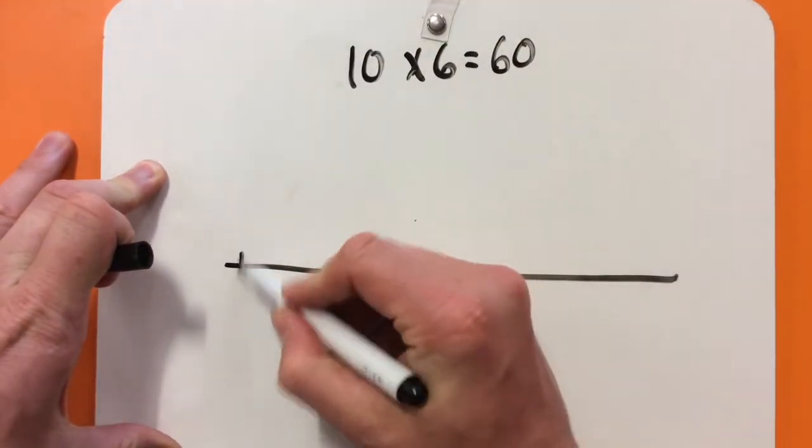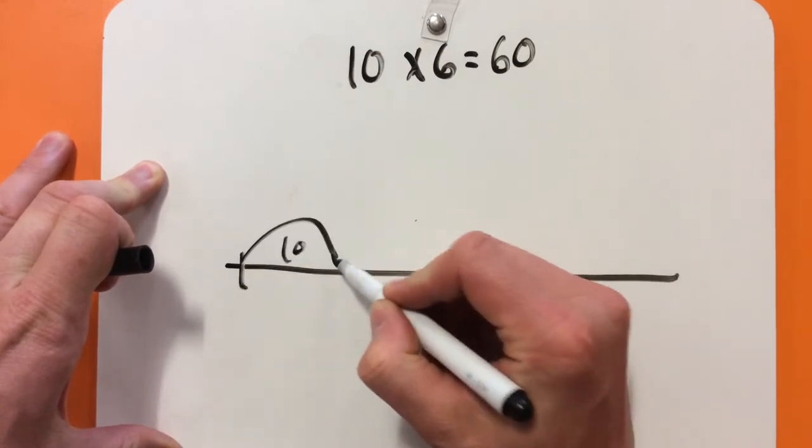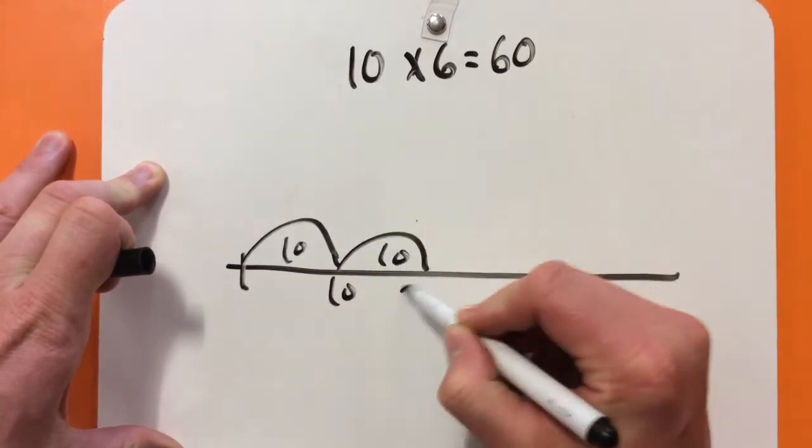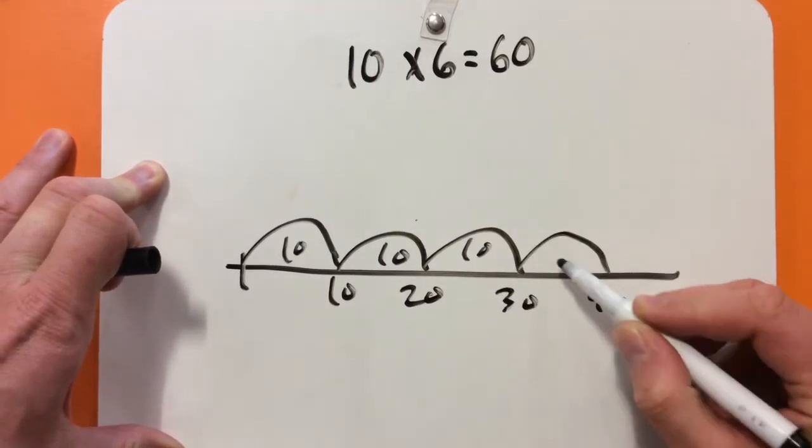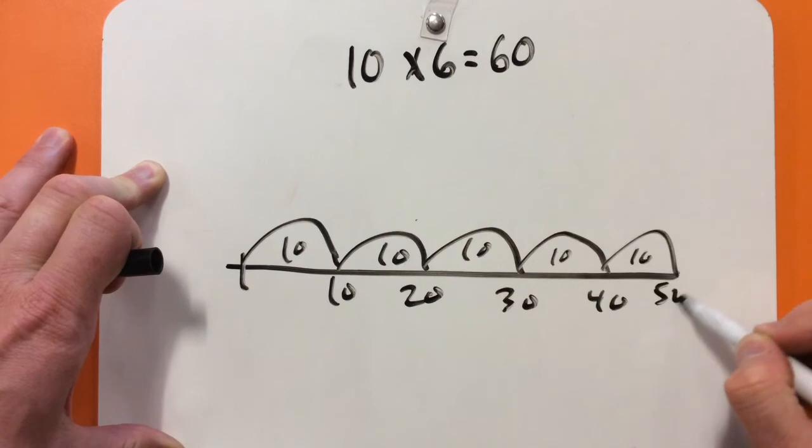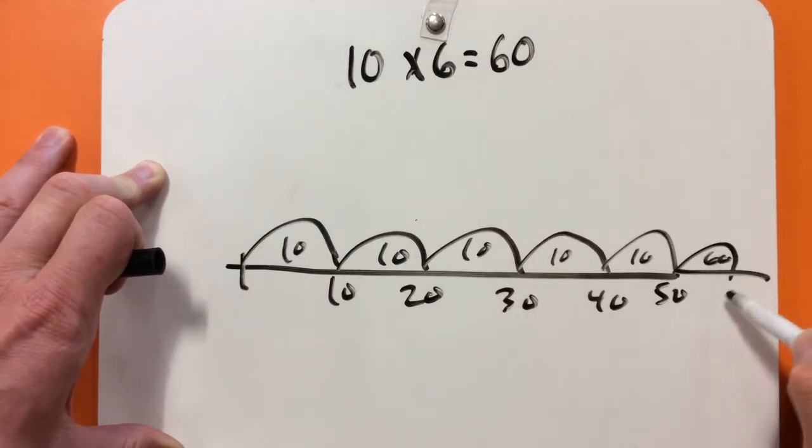Let's write, so we've got 10, 20, 30, 40, 50, and 60.